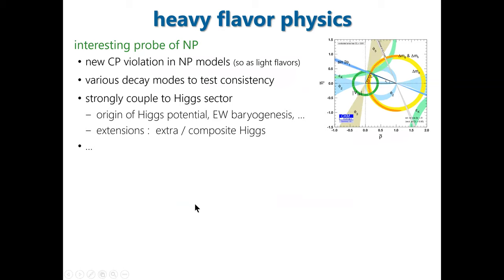Heavy flavor physics is an interesting probe of new physics. There should exist a new CP violation to explain the symmetry between matter and antimatter, and this new CP violation could be hidden in light flavor and heavy flavor physics. Heavy hadrons have various decay modes which enable independent determination of CKM matrix elements and other fundamental parameters, and we can check consistency among such determinations to obtain hints for new physics.